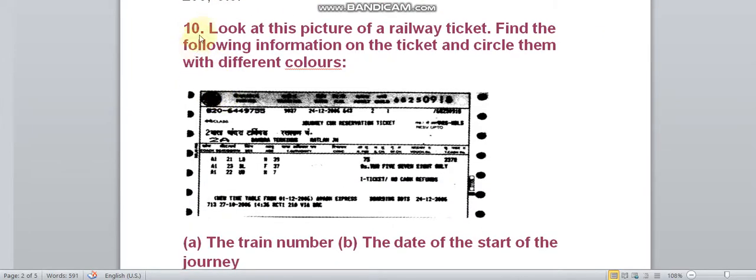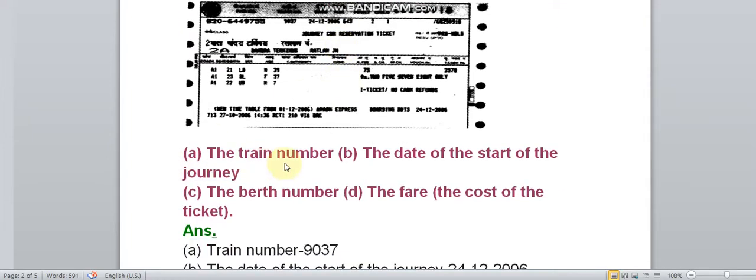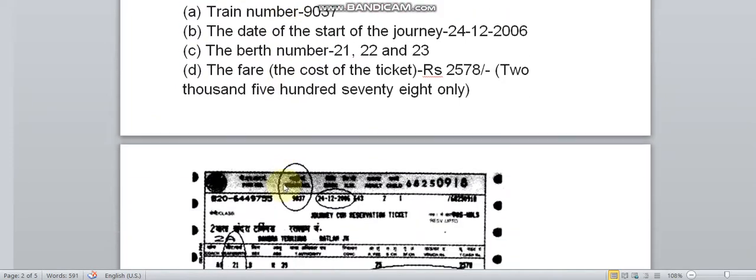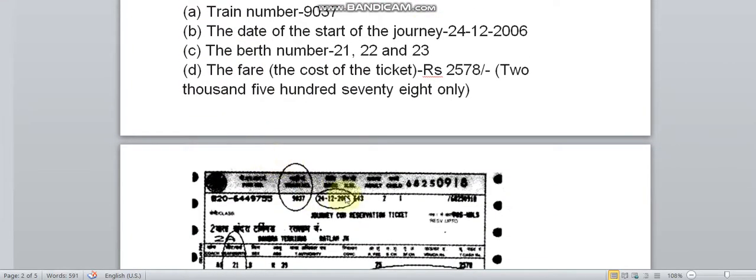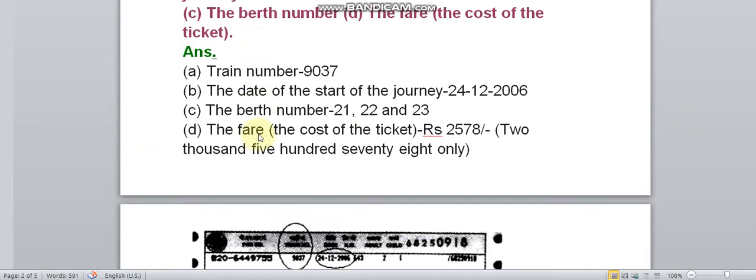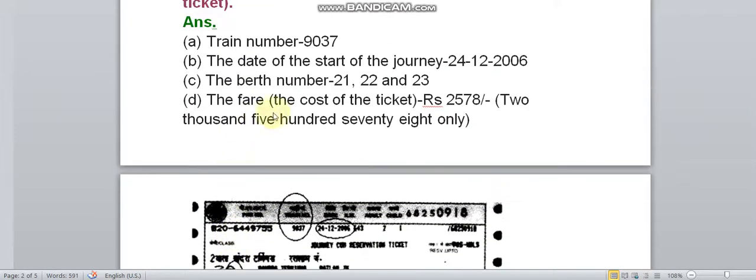Question 10: Look at this picture of a railway ticket. Find the following information on the ticket and circle them with different colors. Train number, the train number is this, 9037. The date of the start of the journey is 24th December 2006. The berth number 21, 22 and 23.